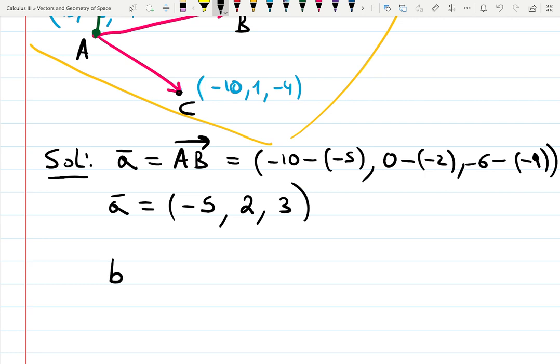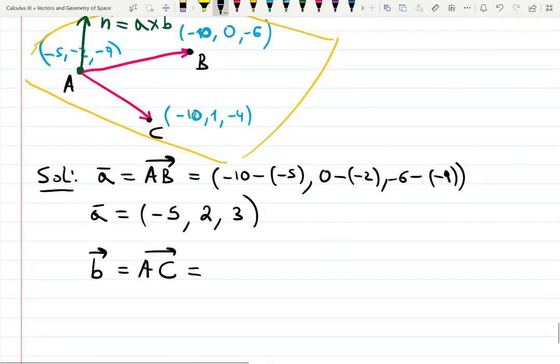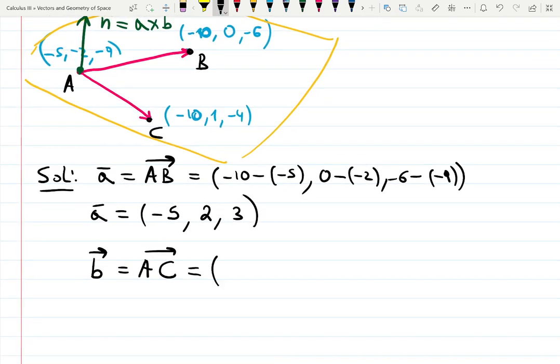B will be AC, and I repeat the same process. Let's just hurry up a little bit. So it's going to be minus 10 and minus minus 5. It will be still minus 5, because minus 10 plus 5. 1 plus 2 is 3, and then minus 4 plus 9 is 5.